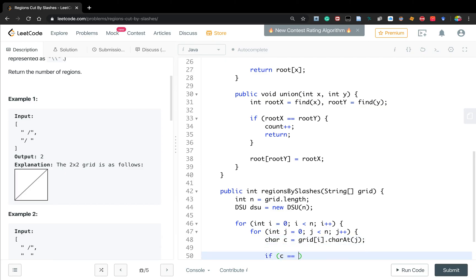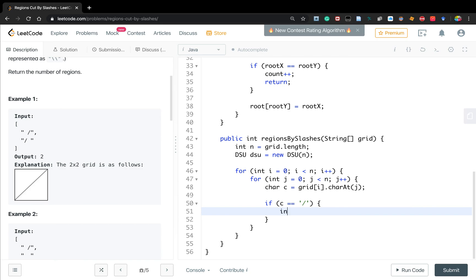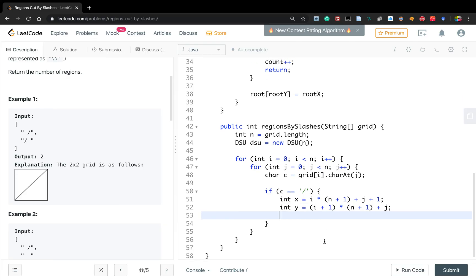If c equal to the slash, we should check two parts. One is the current place, it will be i times n plus one plus j. Actually, we use j plus one because in that case, we know y is always valid, the index. It should be next line, so it will be i plus one times n plus one plus j because it's preceding column. So it will always be valid. If you use j minus one, then we need to check whether j minus one is greater or equal to zero. In this case, we don't need to check. So then dsu union x, y.